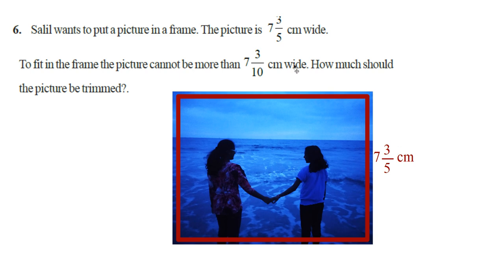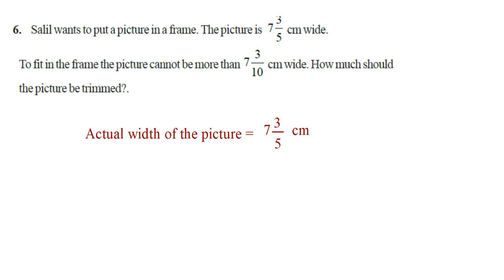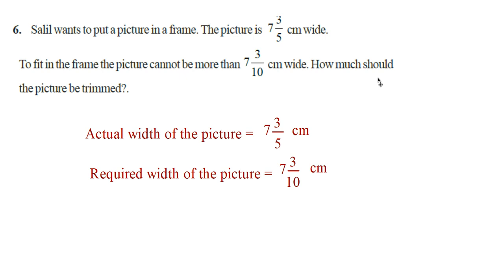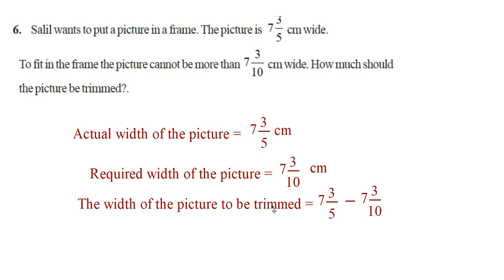The actual width of the picture is 7 3/5 centimeter, and the required width is 7 3/10 centimeter. To find the width to be trimmed, subtract 7 3/10 from 7 3/5. Converting: 7 3/5 = 38/5 (since 7 × 5 + 3 = 38), and 7 3/10 = 73/10 (since 7 × 10 + 3 = 73). Now take the LCM of 5 and 10, which is 10.